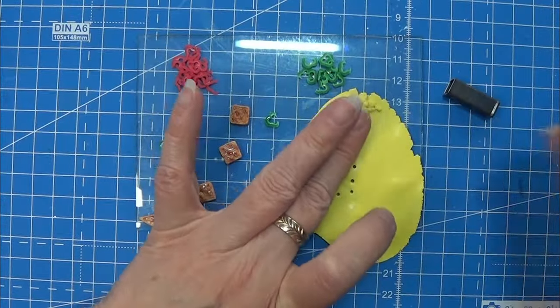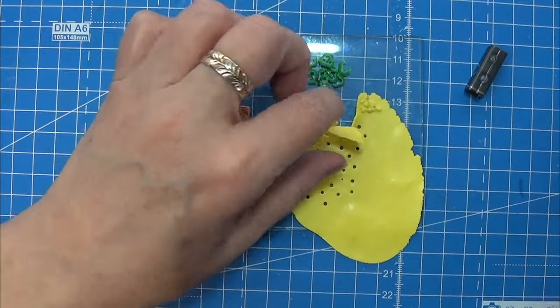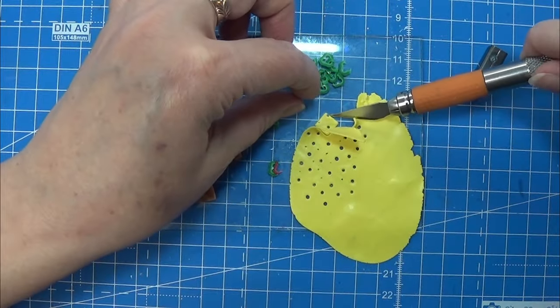The yellow clay here is rolled out on the second thinnest setting on my pasta machine.